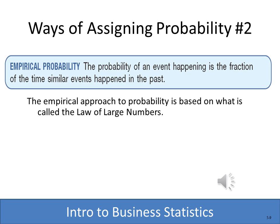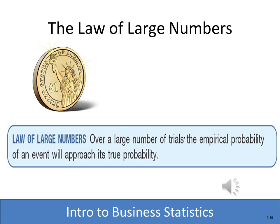Now we have another way of assigning probability called empirical probability. With empirical probability, we assign the probability of an event happening based on what's happened in the past. To do that, we can use the Law of Large Numbers, which tells us that the more times we try something, the more likely it is to approach its true probability.